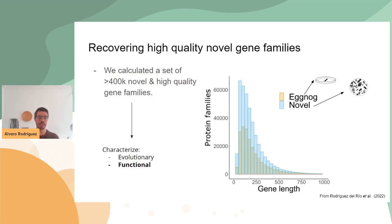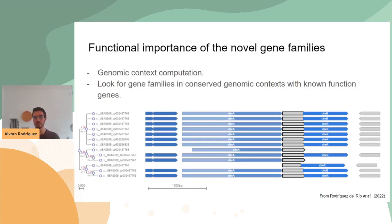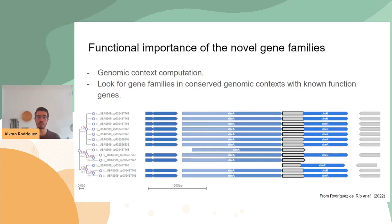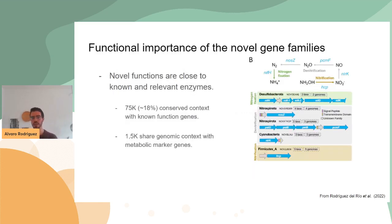We can say that the novel gene families are relevant from an evolutionary point of view. Now we wanted to know whether they are relevant from a functional point of view. For this, we reconstructed the genomic context of these novel gene families, taking advantage of the fact that prokaryotic genomes are very compact and that genes performing the same function usually cluster together in the genome. So if we found a novel gene family in conserved genomic context with a particular known-function gene, we can say that this novel gene family may be doing something similar, or at least be in the same pathway.